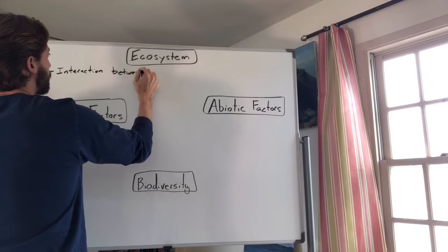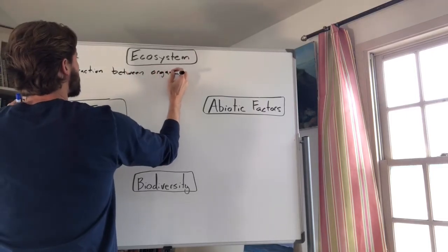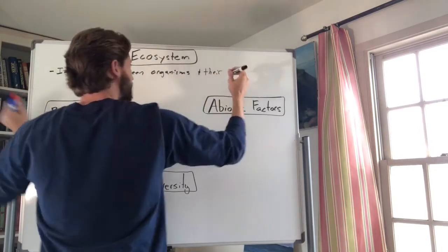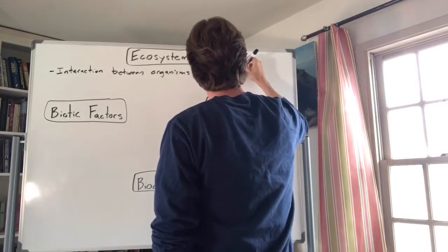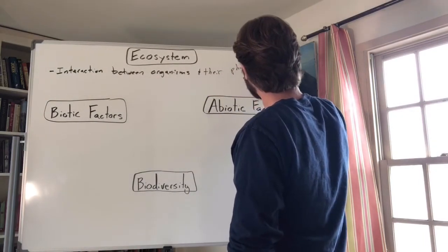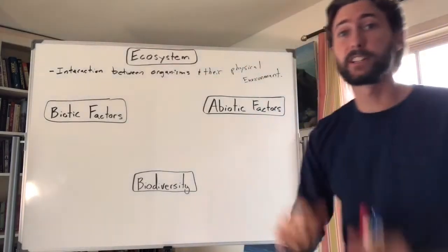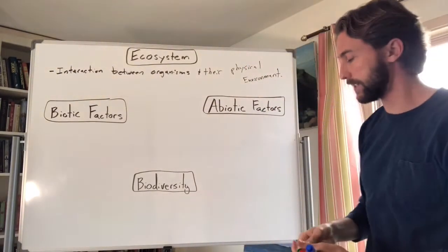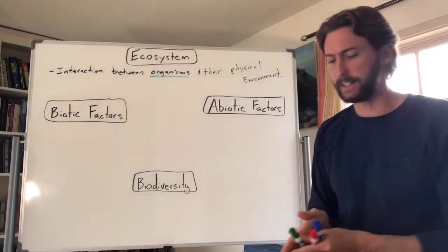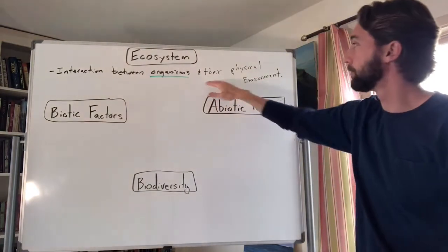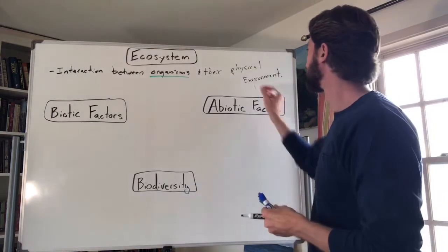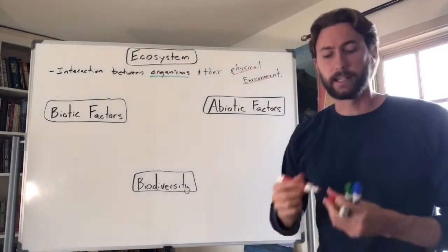An ecosystem is the interaction between organisms and their physical environment. Organisms are living things — we're talking about plants, animals, microorganisms, bacteria, anything that's alive. The physical environment refers to non-living things.